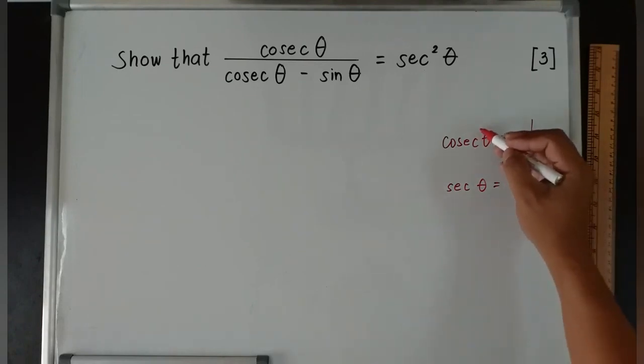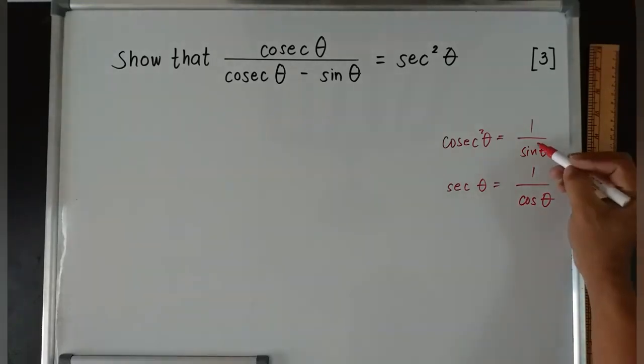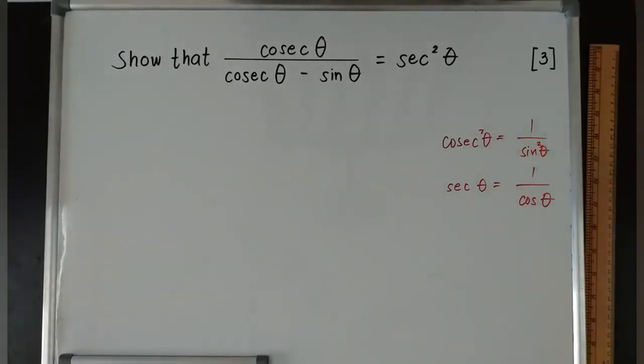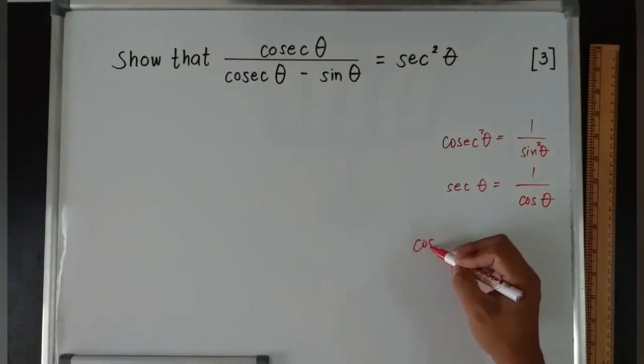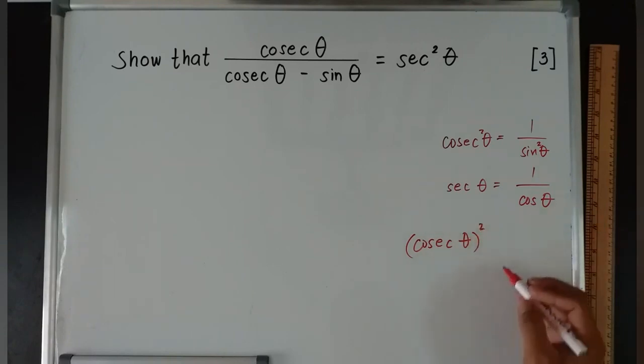If I put a square here, will it still be equal to 1/sin θ? No, it should be sine squared. Remember, if you square cosec θ, it will be equivalent to cosec² θ. Those are the basics that you need to know about this.